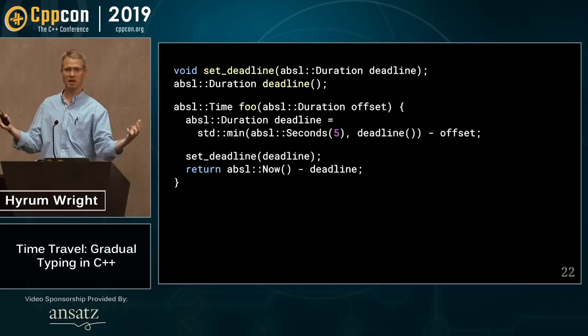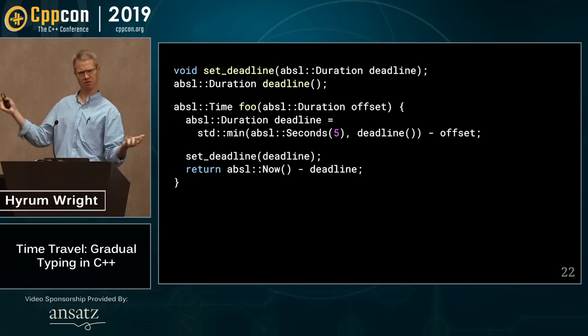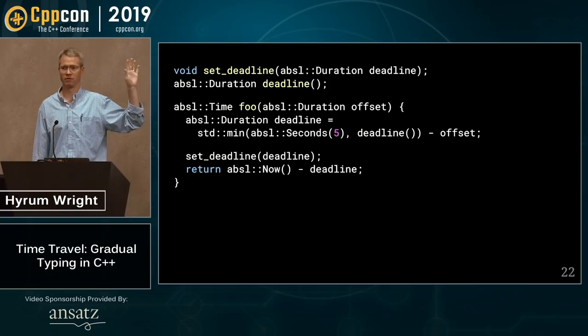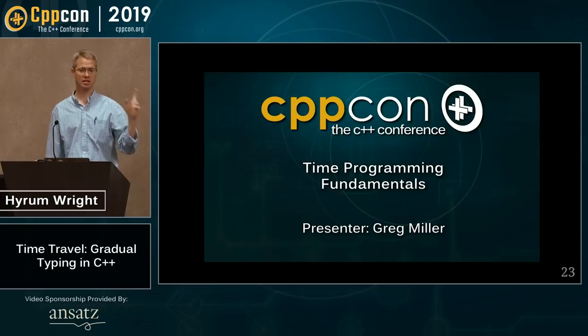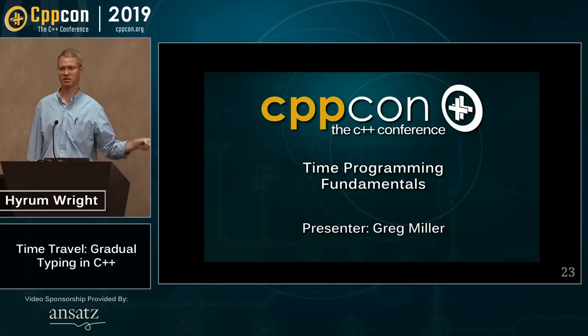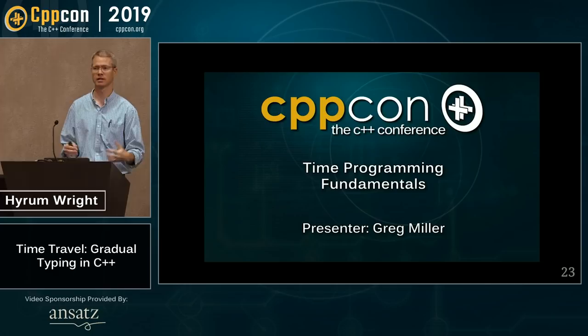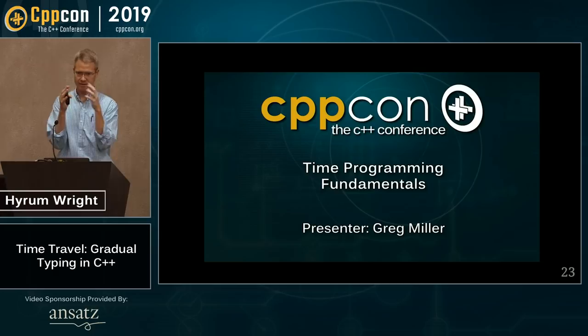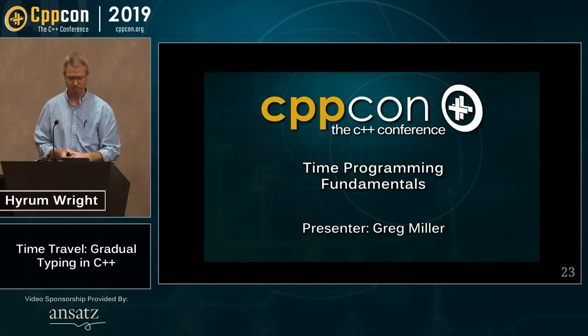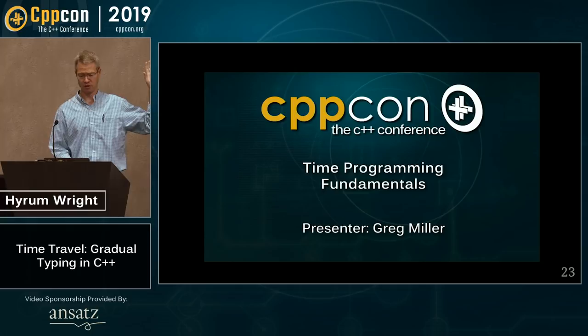The type system prevents you from doing things that are nonsensical, like adding two time instants together to get another time instant — that's actually meaningless. I won't go too deep into this because in 2015 my colleague Greg Miller gave a talk called 'Time Programming Fundamentals' at CppCon. You should go watch it — it covers the nuances of time programming, differences between time types, calendars, and civil time.